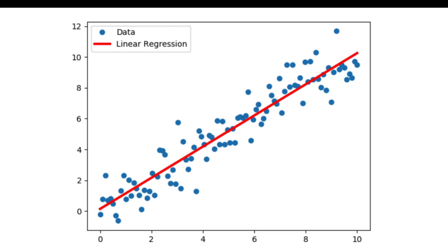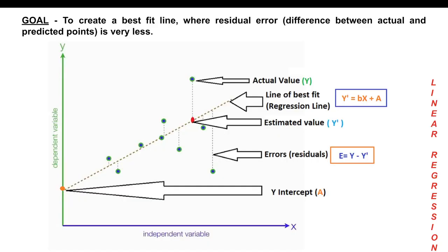From our school mathematics we already know the formula for a straight line: y = mx + c, where y is the output, m is the slope, and c is the constant. What your model is trying to do in linear regression is find exactly that line. Once it has that line, the moment you pass any new value of x, it will automatically derive the most accurate value of y — that is what linear regression is all about.